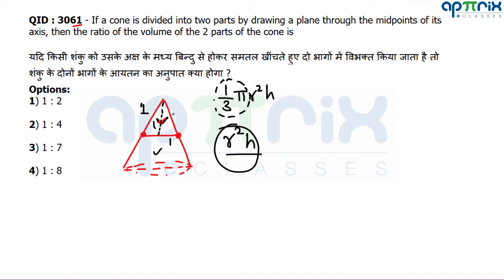Now using the similar triangle property, if the small cone has height 1 and the midpoint divides the axis equally, then the full cone has height 2. By similar triangles, the full cone's radius is also 2. Since volume scales as r²h, and r and h both double, the ratio is 2³ = 8. So the small cone volume is 1, the large cone volume is 8.